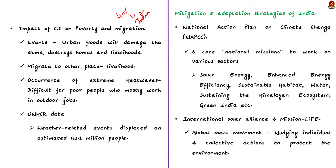Finally, climate change's influence on poverty and migration. Climate change will increase factors that lead to poverty. Urban floods will damage slums, destroy houses, and livelihoods of the urban poor. Extreme heat waves make it difficult for the poor to work in outdoor jobs. UNHCR data shows that between 2010 and 2019, weather-related events displaced an estimated 23.1 million people on average each year, leaving many more vulnerable to poverty.